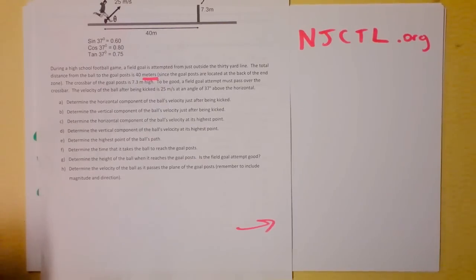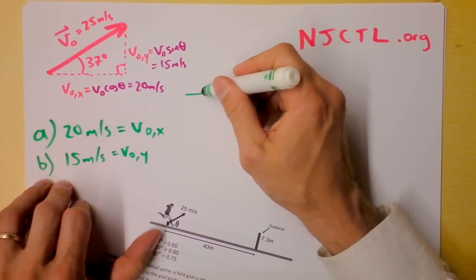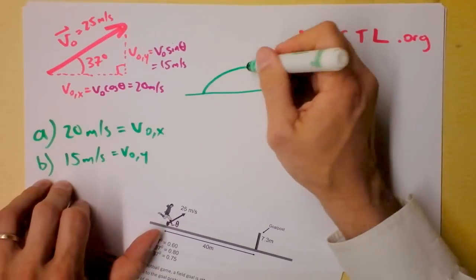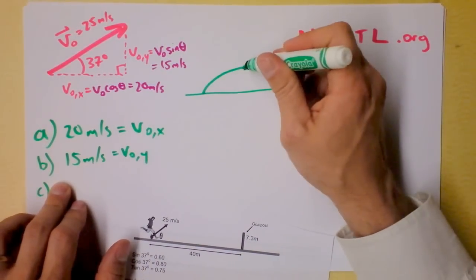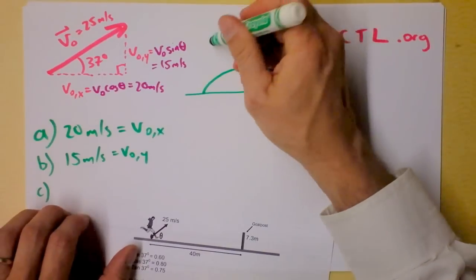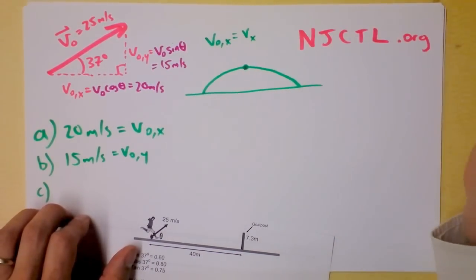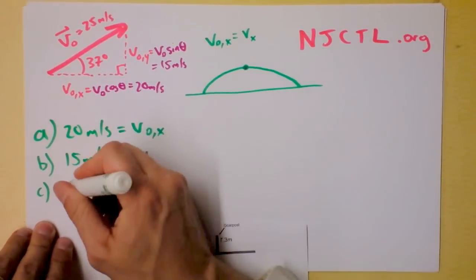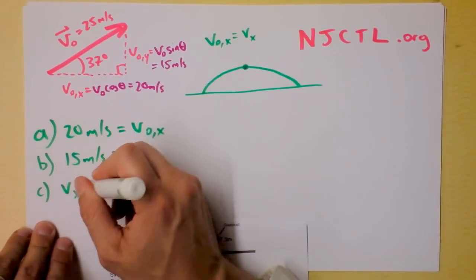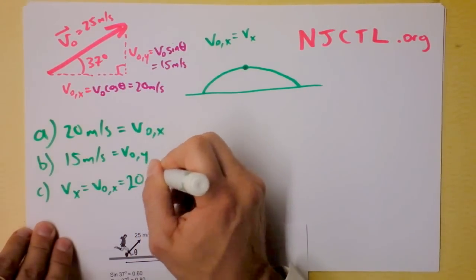Part C: determine the horizontal component of the ball's velocity at its highest point. Now we're talking about the top of the parabola. The nice thing is the initial velocity in the x direction equals the final velocity in the x direction, because there's no acceleration in x. So the answer is still 20 meters per second.